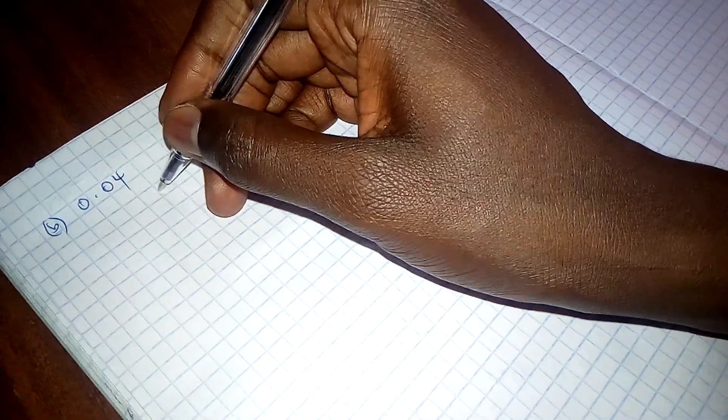Second example, we want to find the square root of 0.04. So how do we write this number in the range that we know?